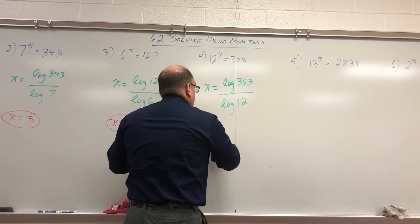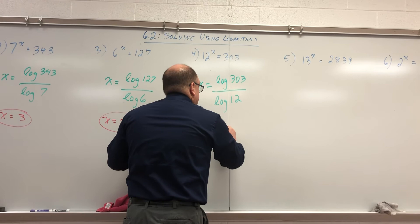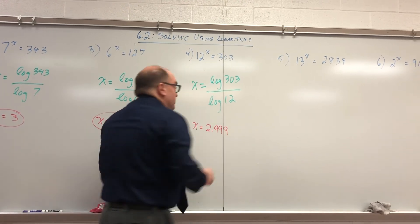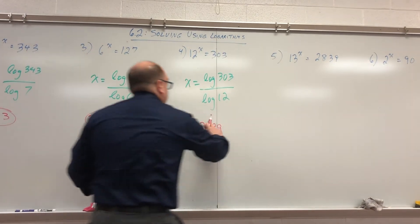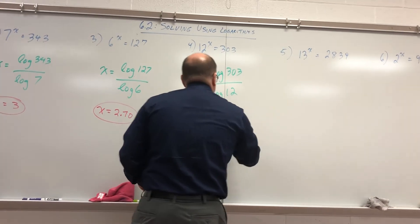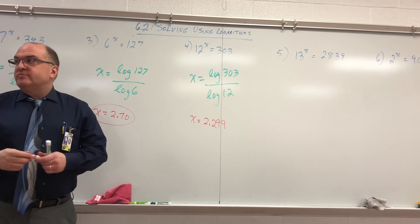What did you get? I get 2.999, which is like 2.299, my fault. 2.299, which is like 2.30.